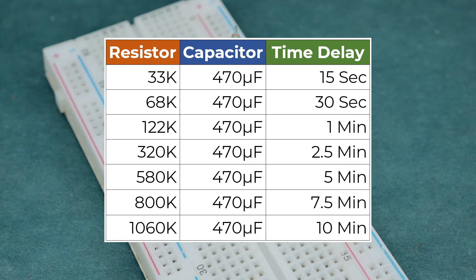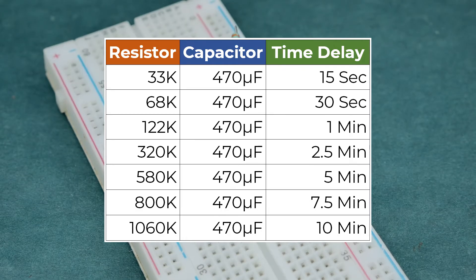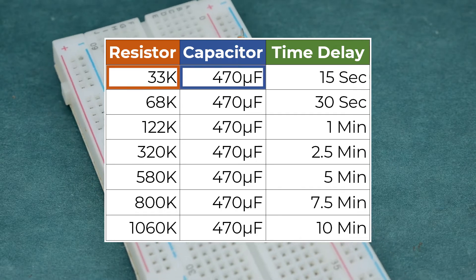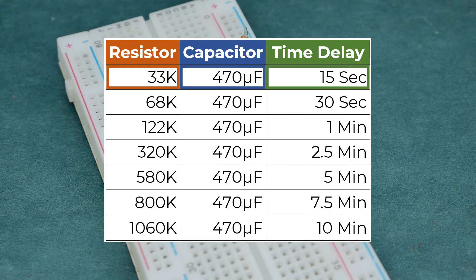You can refer to this table on what values of resistor or capacitor you need to use for any given delay duration. For this circuit, we have used a resistor of 33 kohms and capacitor of 470 microfarad. So the delay should be around 15 seconds.